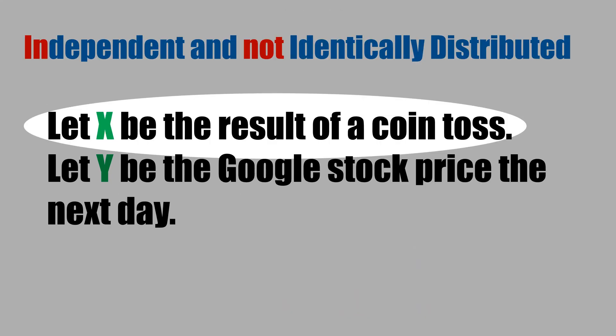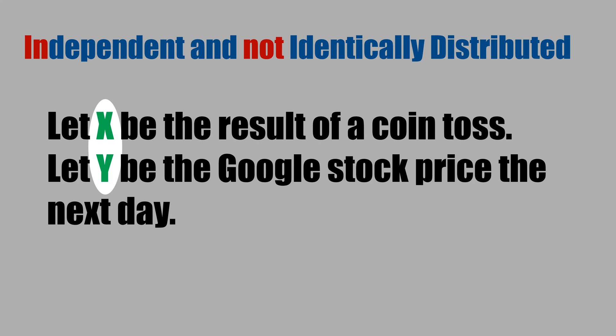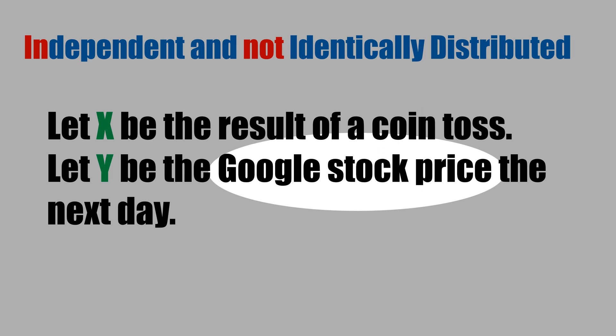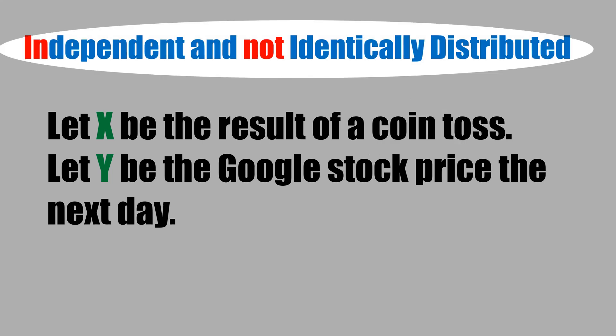Now assume that x is the result of a coin toss and y is the Google stock price the next day. Note that x and y provide no information about each other — it's hard to believe you can predict the stock price of Google based on a coin toss. However, the probability density function of the Google stock price is not the same as that of a coin toss. Therefore, x and y are independent but not identically distributed.